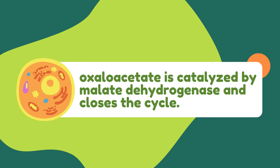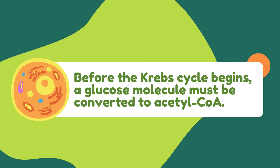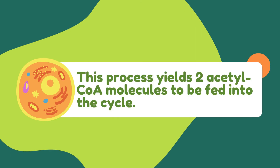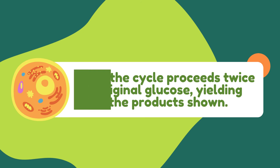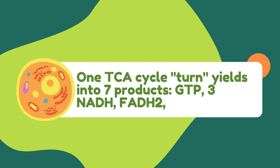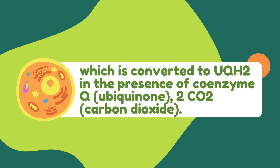The last step — NAD-coupled oxidation of L-malate to oxaloacetate — is catalyzed by malate dehydrogenase, and closes the cycle. Before the Krebs cycle begins, a glucose molecule must be converted to acetyl-coenzyme A, yielding 2 acetyl-CoA molecules fed into the cycle. Thus the cycle proceeds twice per original glucose molecule. One TCA cycle turn yields 7 products: GTP, 3 NADH, FADH2 — which is converted to UQH2 in the presence of coenzyme Q (ubiquinone) — and CO2.